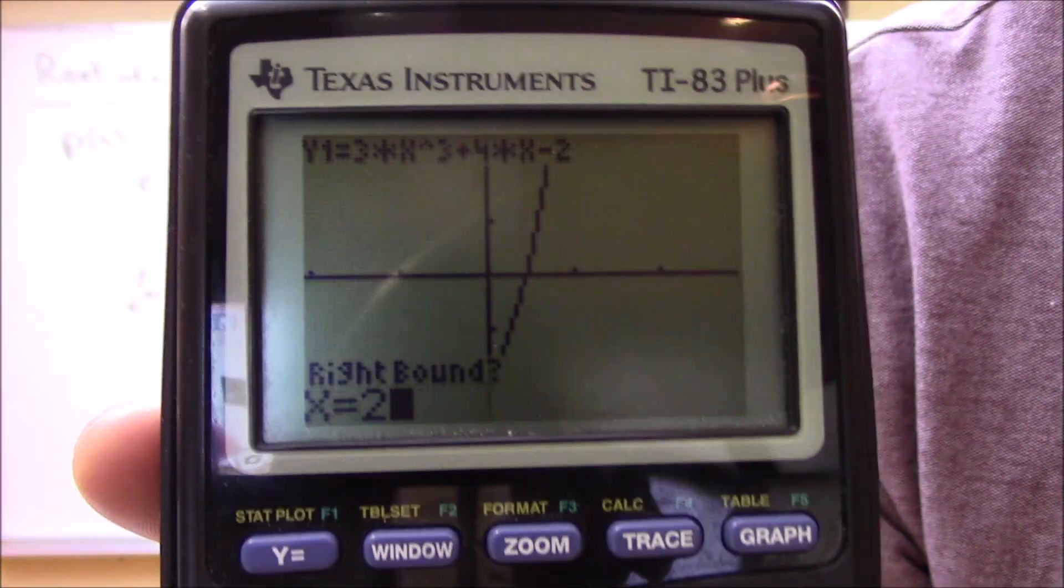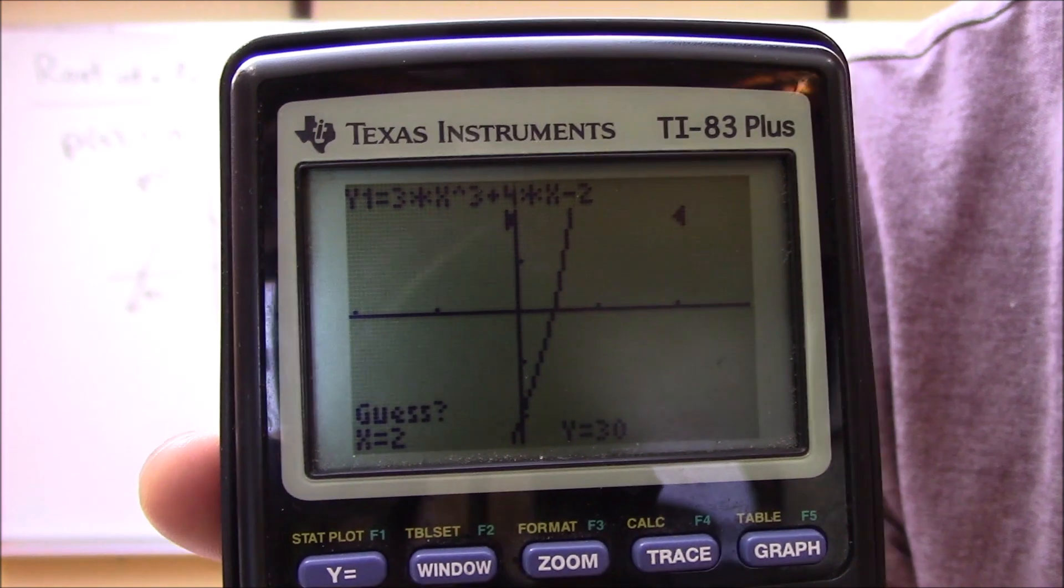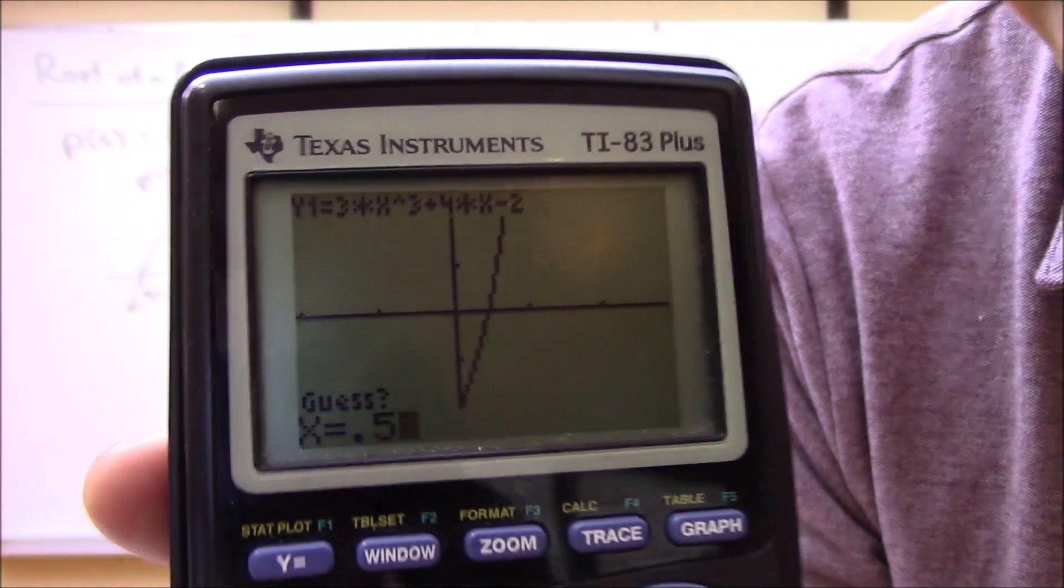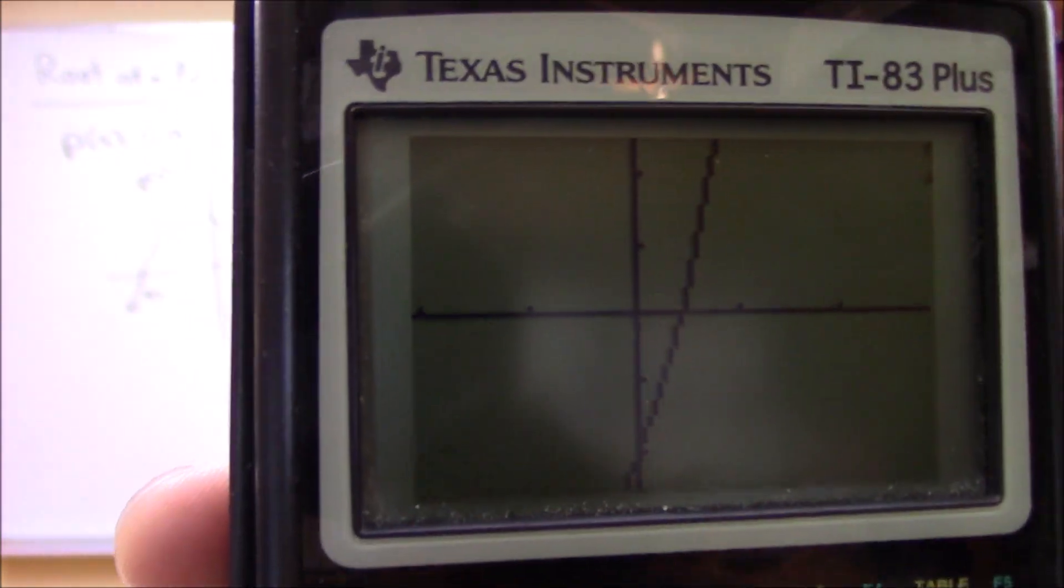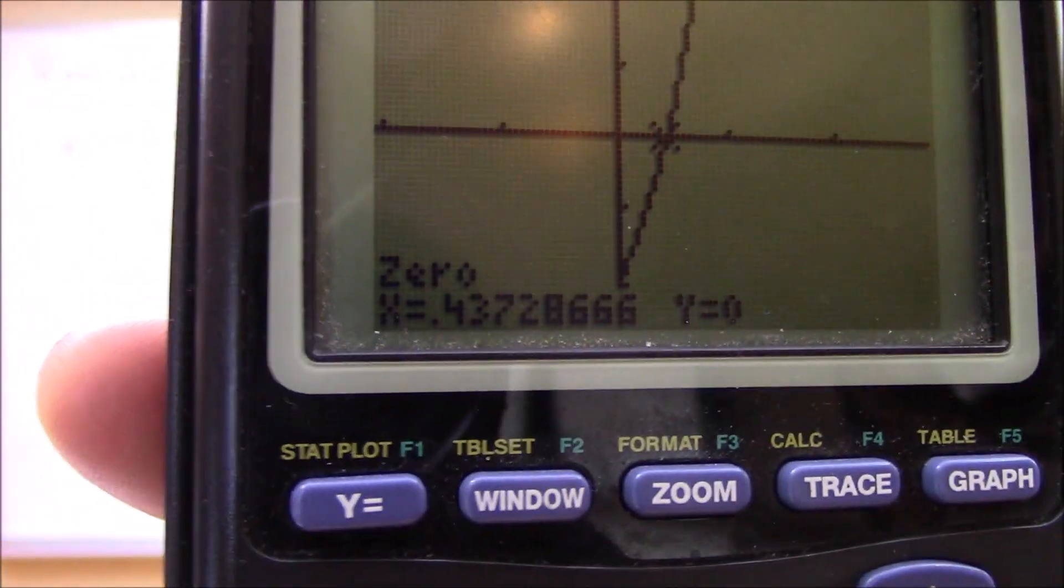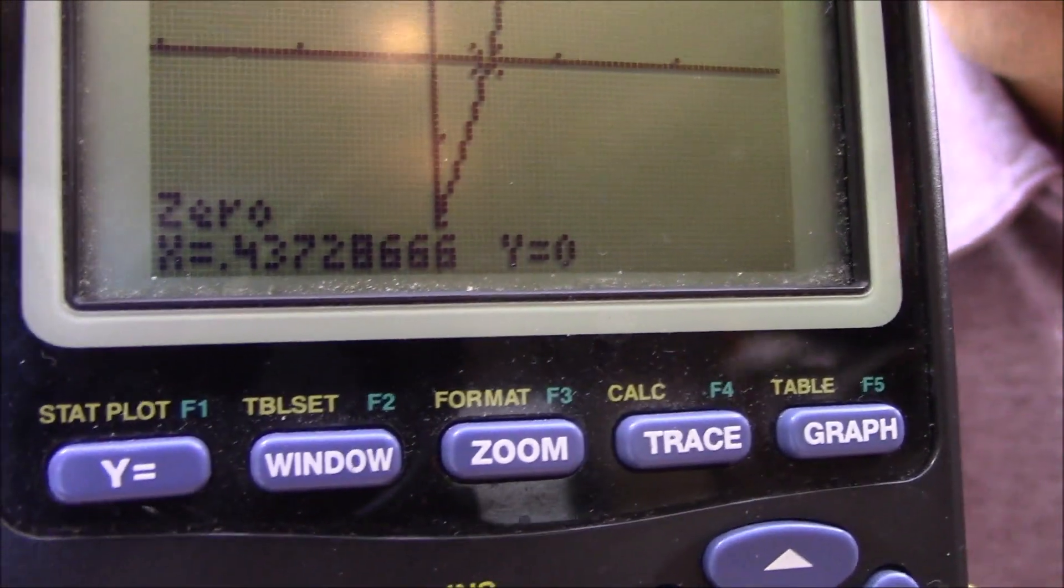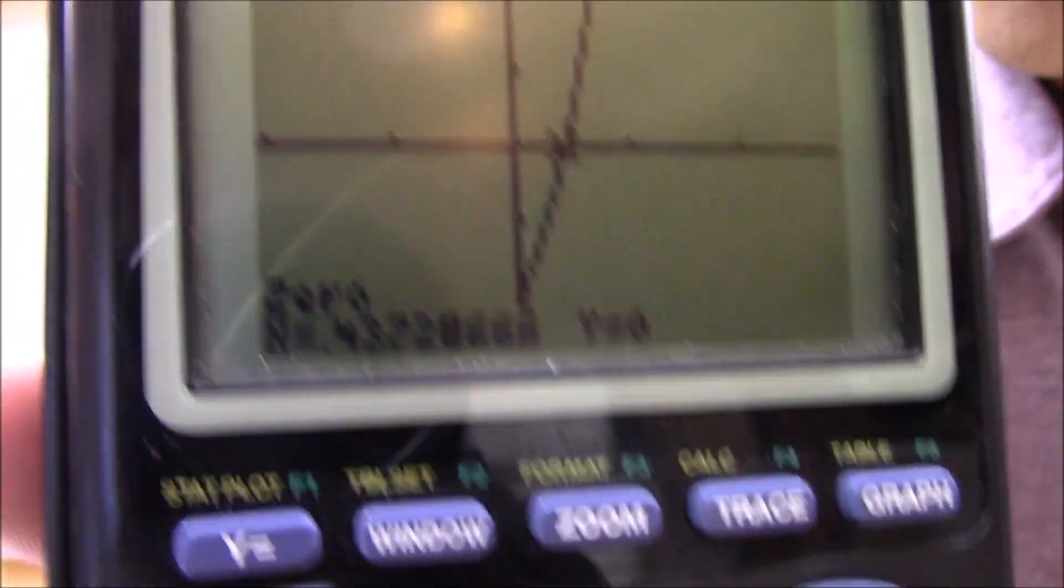I know that should work, and then you can even give it a guess, so I don't know, let's guess 0.5 and then hit enter. And look at that, it actually got us one of the roots, it got the real root of x = 0.437.